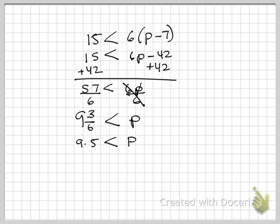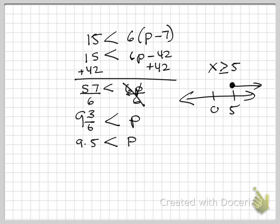Here's mistake number one that kids make. Most of the time when kids are graphing, the variable is on the left. And they get something like this and they go: I've got 0 and 5, it's solid, starting here, going that way. But sometimes kids notice the direction of the arrow matches the inequality symbol — but that doesn't always work if your variable is on the left.